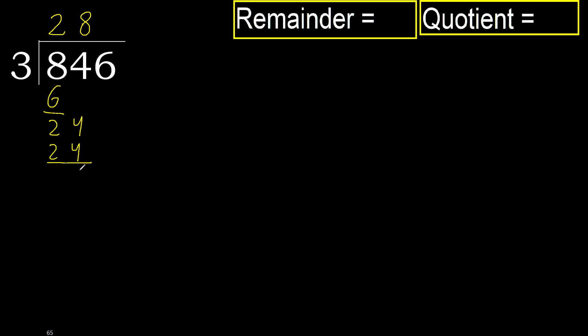Subtract, next. Eliminate 0. 6. 3 multiplied by 3 is 9 — is greater. 3 multiplied by 2, 6 is not greater.